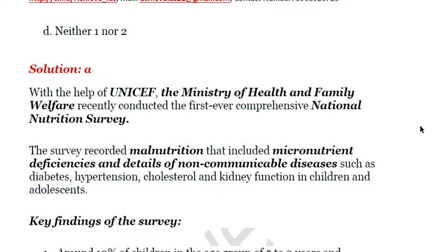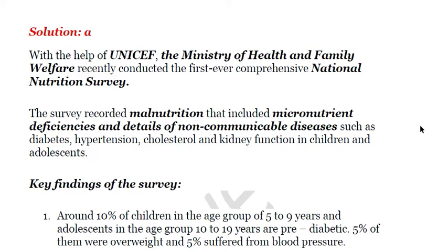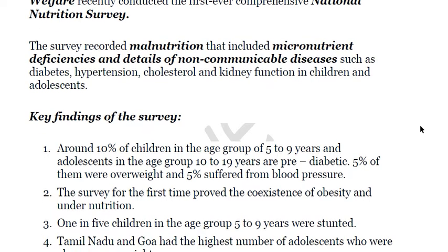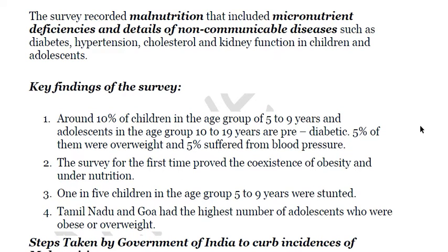This is the first-ever comprehensive National Nutrition Survey. It recorded malnutrition including micronutrient deficiencies and details of non-communicable diseases such as diabetes, hypertension, cholesterol, and kidney function in children and adolescents. Key findings: 10% of children in the age group of 5 to 9 years and adolescents in the age group of 10 to 19 years are pre-diabetic; 5% are overweight; and 5% suffered from high blood pressure.